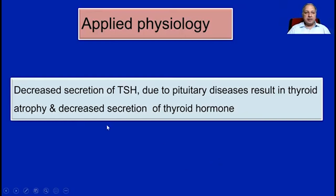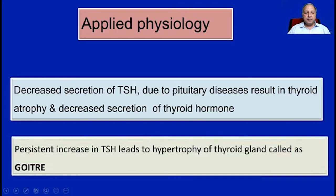Regarding applied physiology: decreased secretion of TSH due to pituitary diseases results in thyroid atrophy and decreased secretion of thyroid hormone, called hypothyroidism. And persistent increase in TSH leads to hypertrophy of the thyroid gland, generally called goiter.